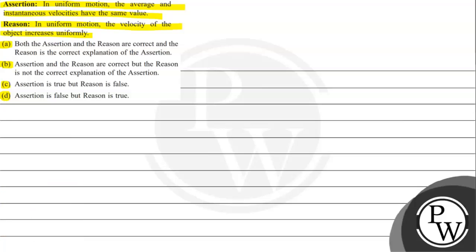The key concept we need to understand in this question is the difference between average velocity and instantaneous velocity.